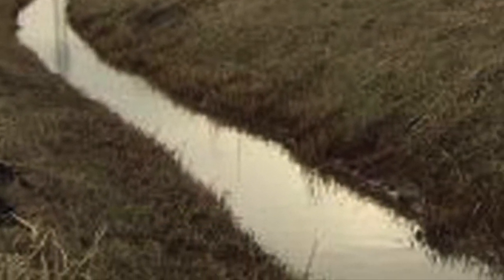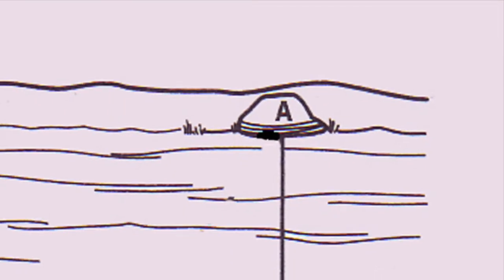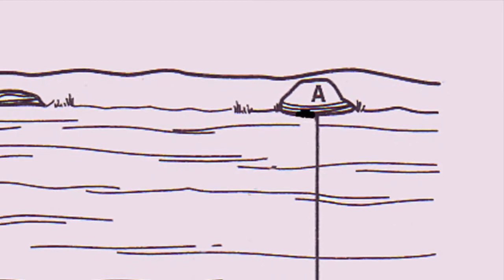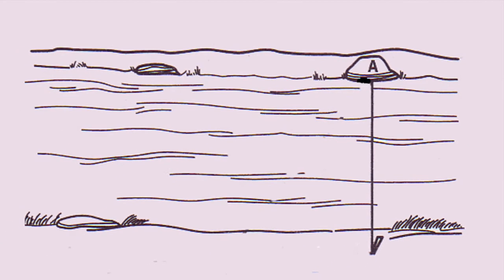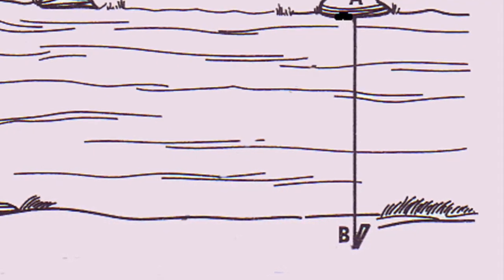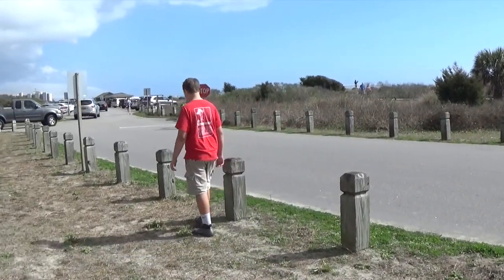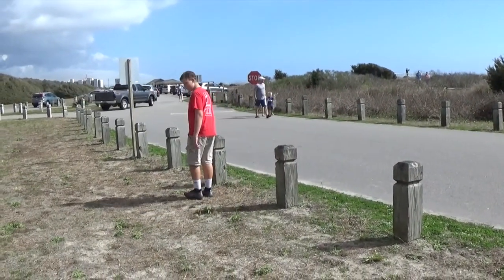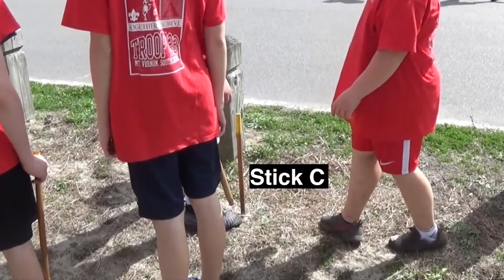Imagine you need to figure out the width of a stream or ditch that you can't walk across. Again, you can use the stick method. First, locate a rock or some other object on the far side of the expanse — we'll call this point A. Opposite the object on the far side, place a stick on your side of the expanse — let's call this stick B. Walk along the side of the expanse at a right angle, 90 degrees, taking any number of paces — 10 for example — and place another stick there. We'll call this stick C.